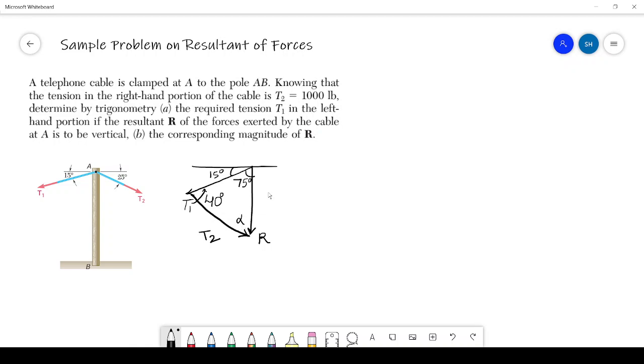And suppose this angle is alpha. Then alpha plus 40 plus 75 should be 180 degrees. Then you can find alpha is 180 minus 115. So alpha will be, here we have 5 then 7 minus 1 is 6, 65 degrees. So this angle alpha equals 65 degrees.